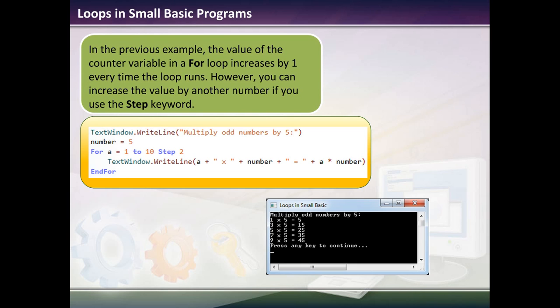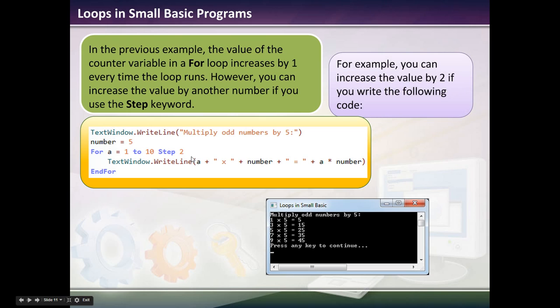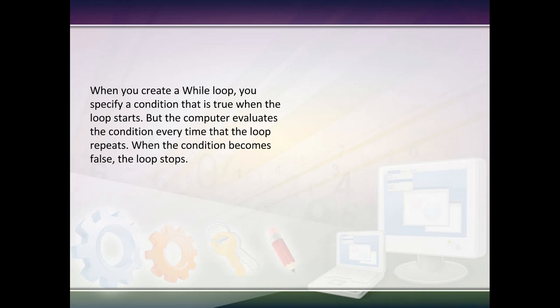In the previous example, the value for the counter variable in the for loop increases by 1 every time the loop runs. However, you can increase the value by another number if you use the step keyword. In this example, if we do the exact same thing, we would say step 2, which means it will count by 2. So the first time it will go through, I would have 1. Then I count by 2. The next time I would have 3, 5, 7, 9. And it would skip over those other numbers.